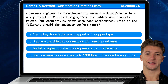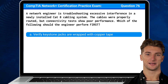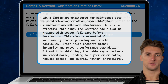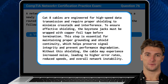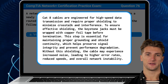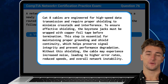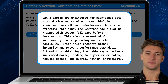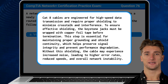The answer is A: Verify keystone jacks are wrapped with copper tape. CAT-8 cables are engineered for high-speed data transmission and require proper shielding to minimize crosstalk and interference. To ensure effective shielding, the keystone jacks must be wrapped with copper foil tape before termination. This step is essential for maintaining proper grounding and shield continuity, which helps preserve signal integrity and prevent performance degradation.